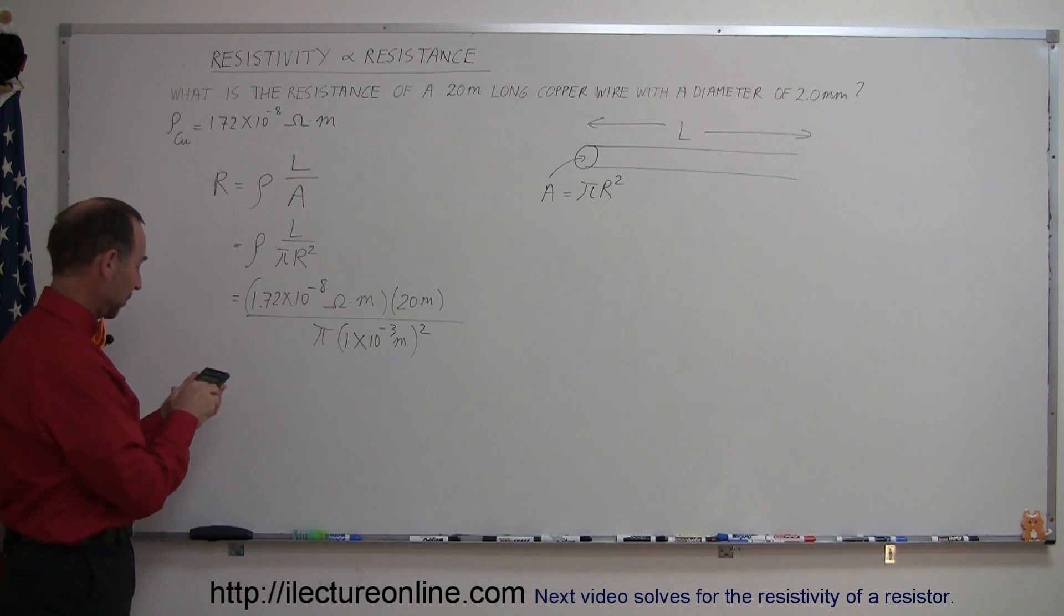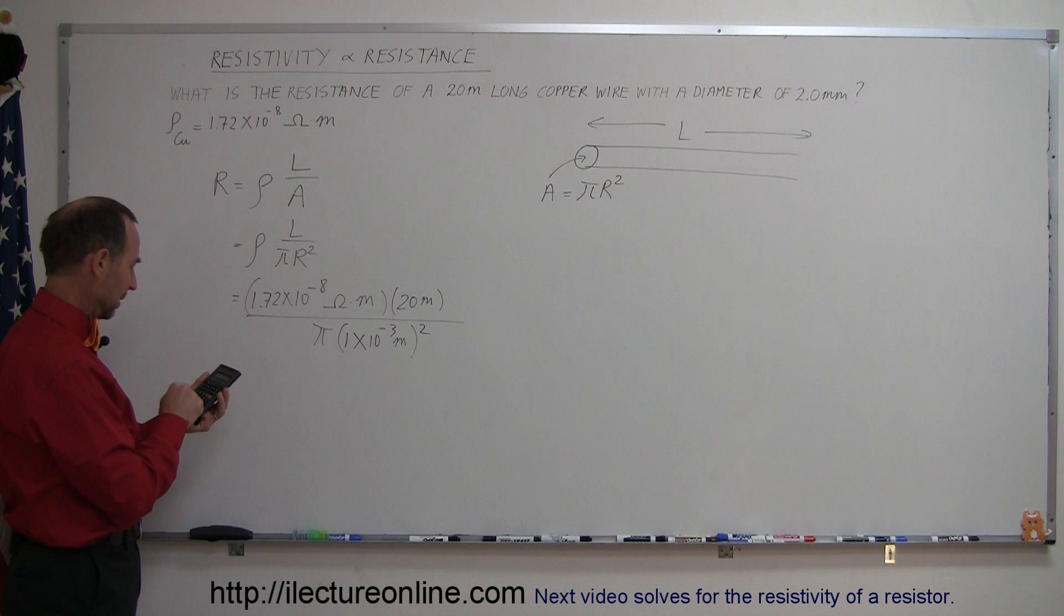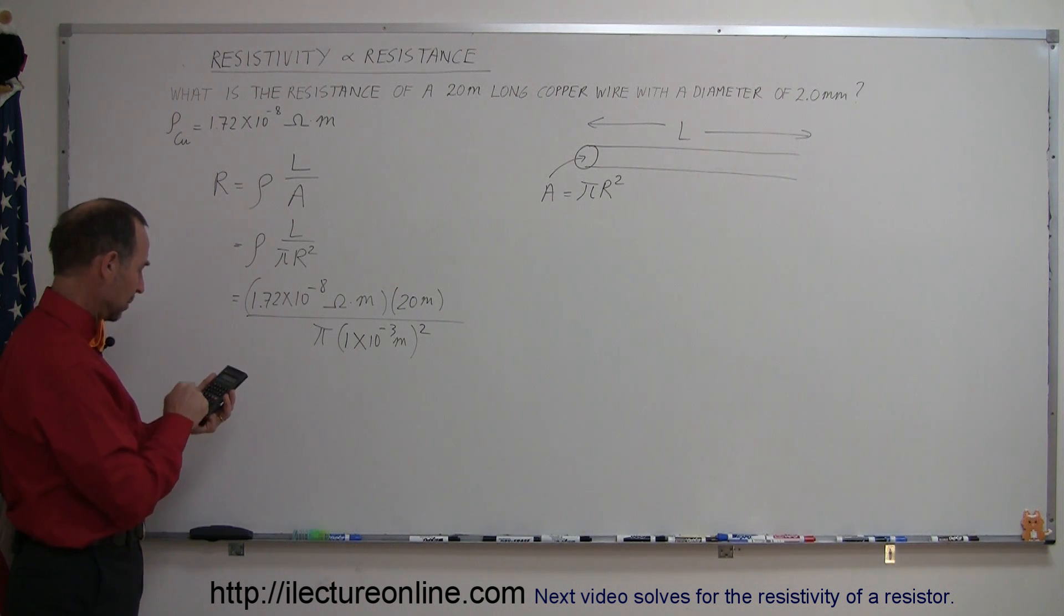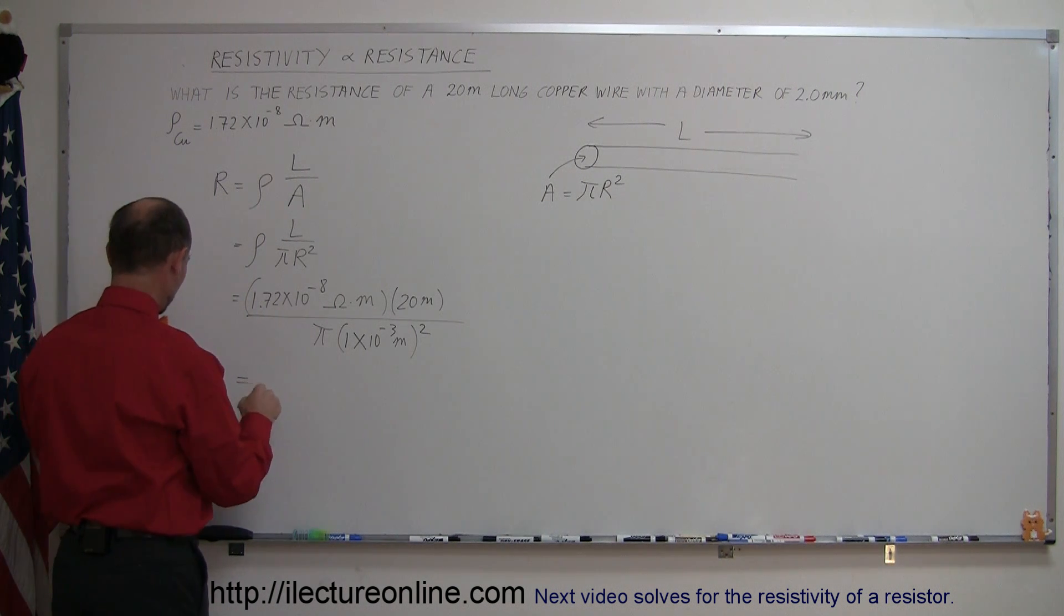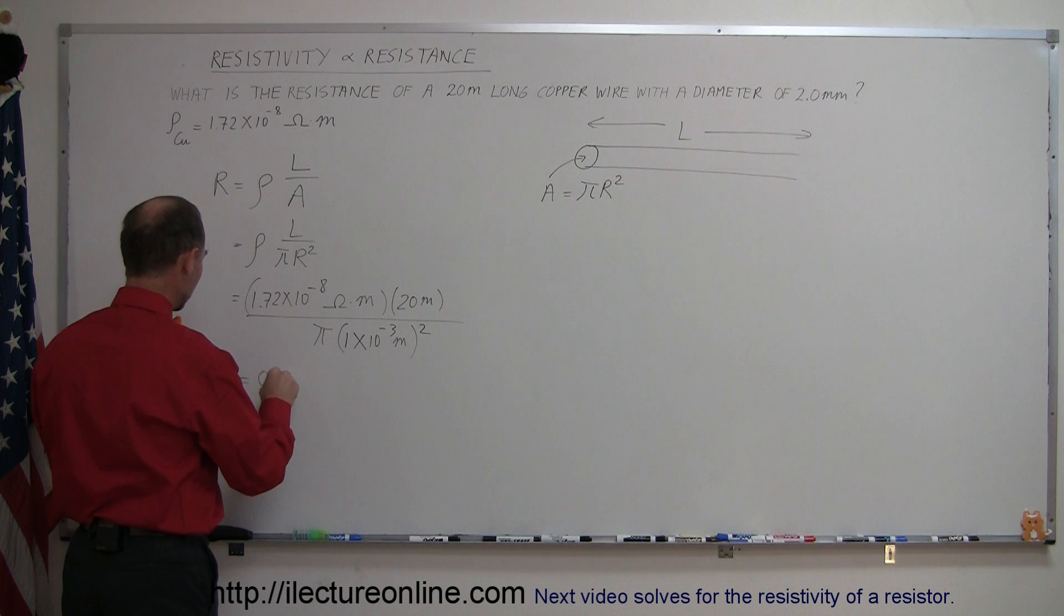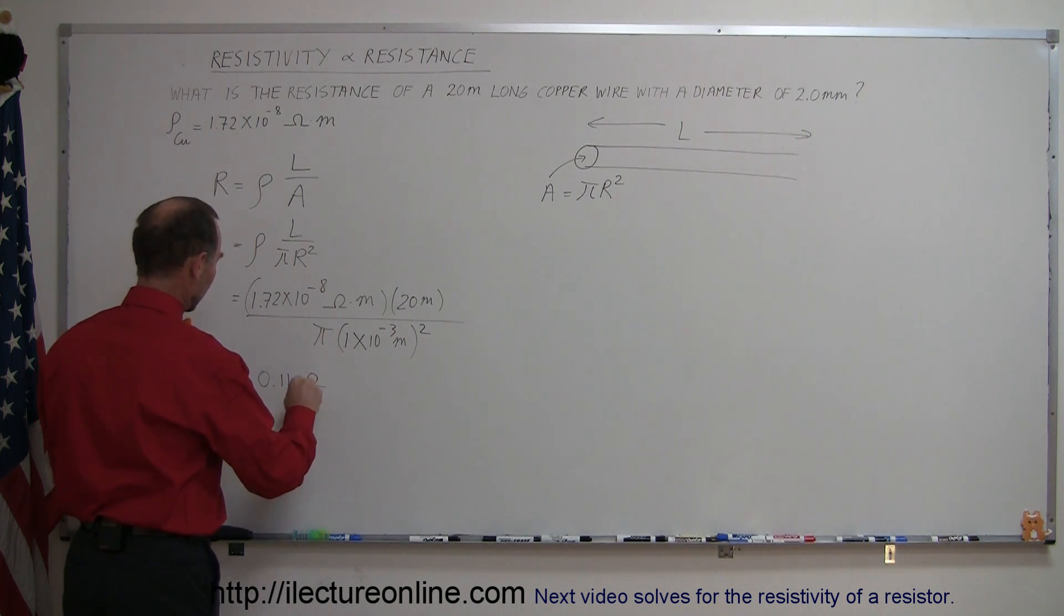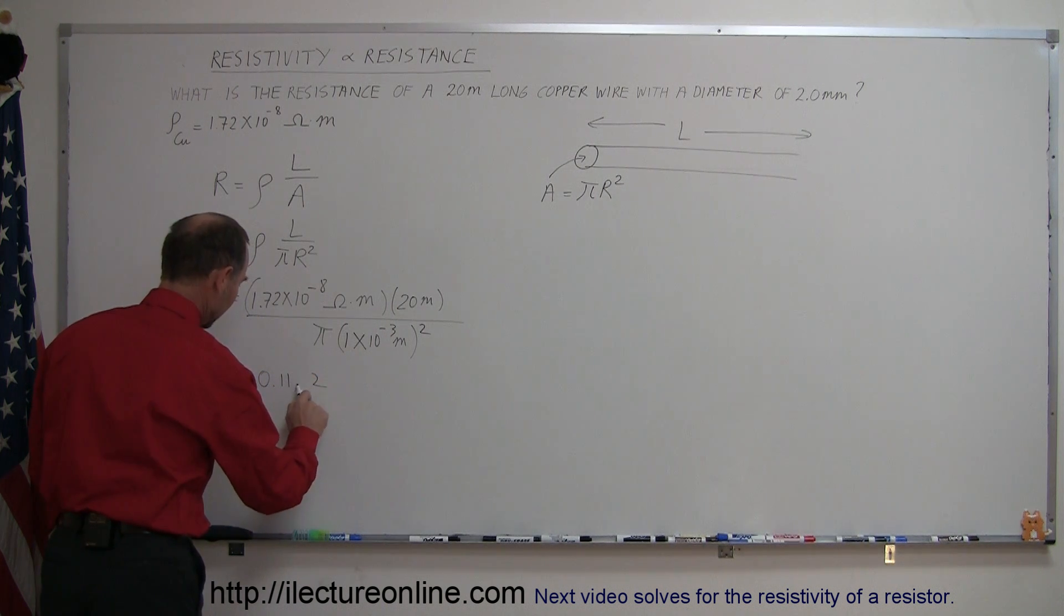Now with a calculator, let's figure out what that is. So this is 1.72 × 10⁻⁸ times 20 divided by π and divided by (1 × 10⁻³)² equals. The resistance of such a wire is 0.11 ohms.